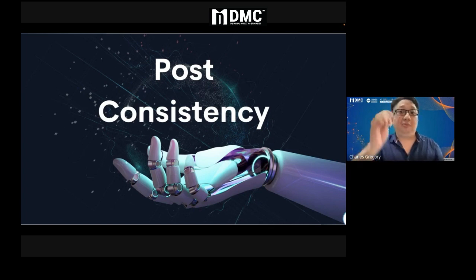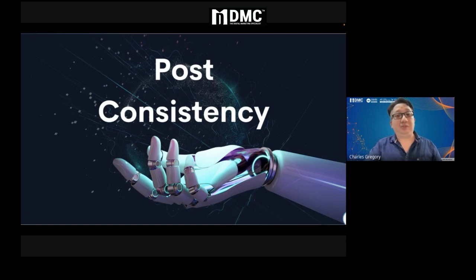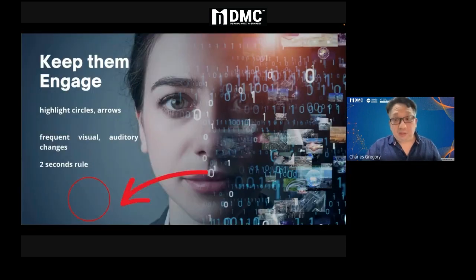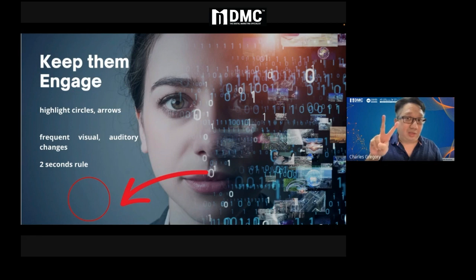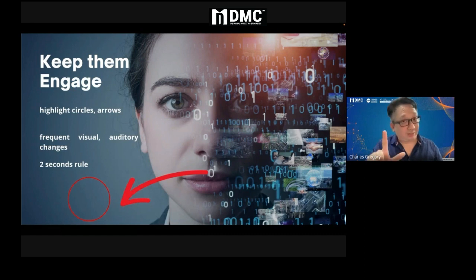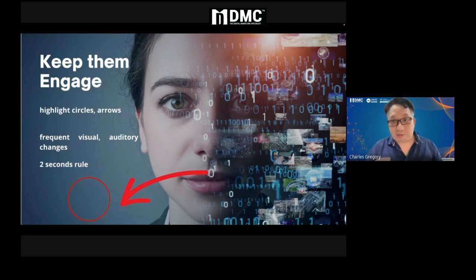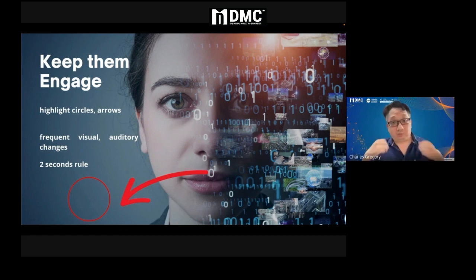Post consistency is key. Get a VA, get a part-timer, get someone who can help you do this — we need to have content today. Now, keep them engaged. People on Shorts and TikTok only have two seconds to decide whether they want to watch a video or not. Two seconds — not seven like a goldfish, two. So how do you get people to interact? By having visual cues, highlight circles, arrows moving everywhere, frequent visual and auditory changes.